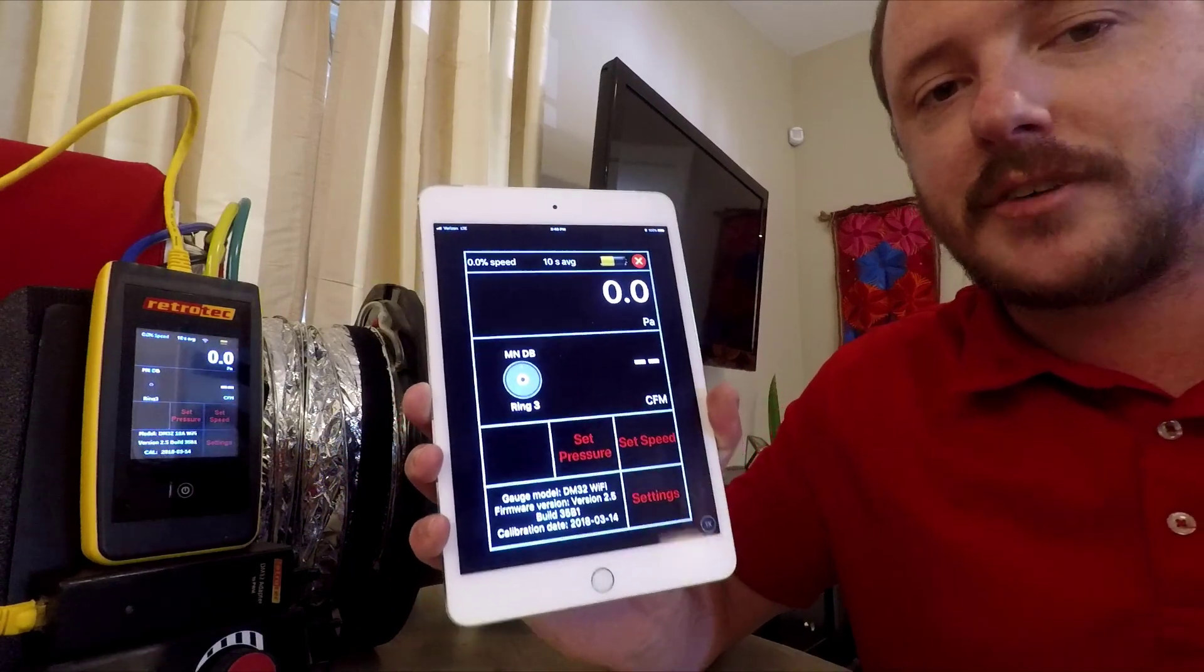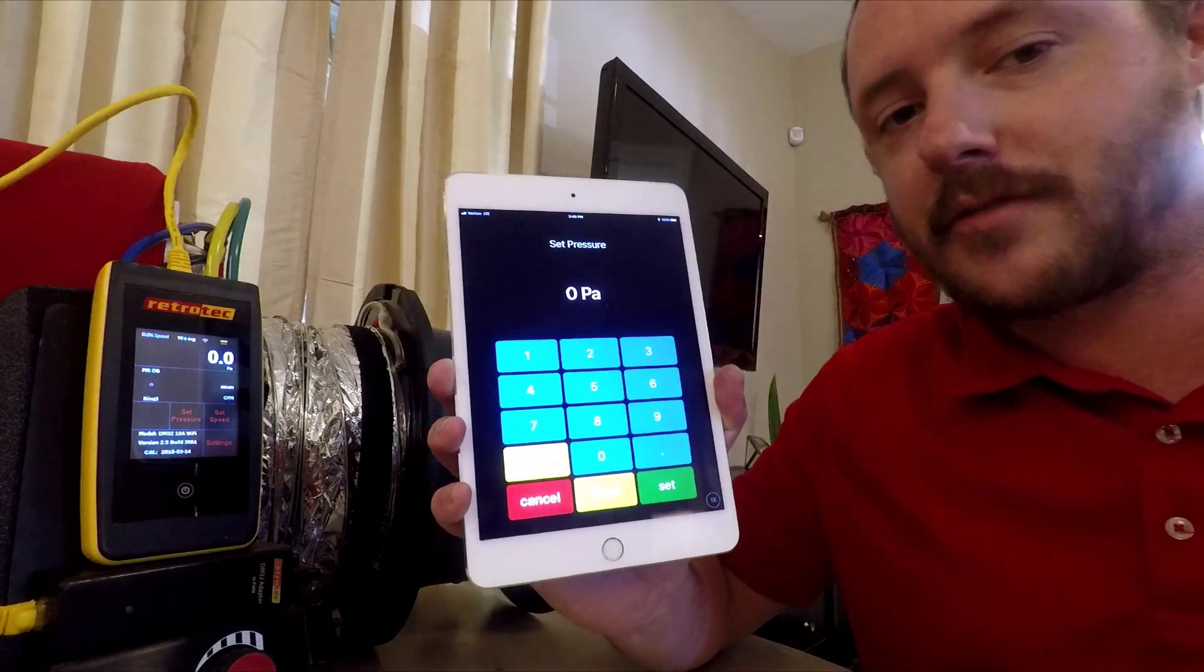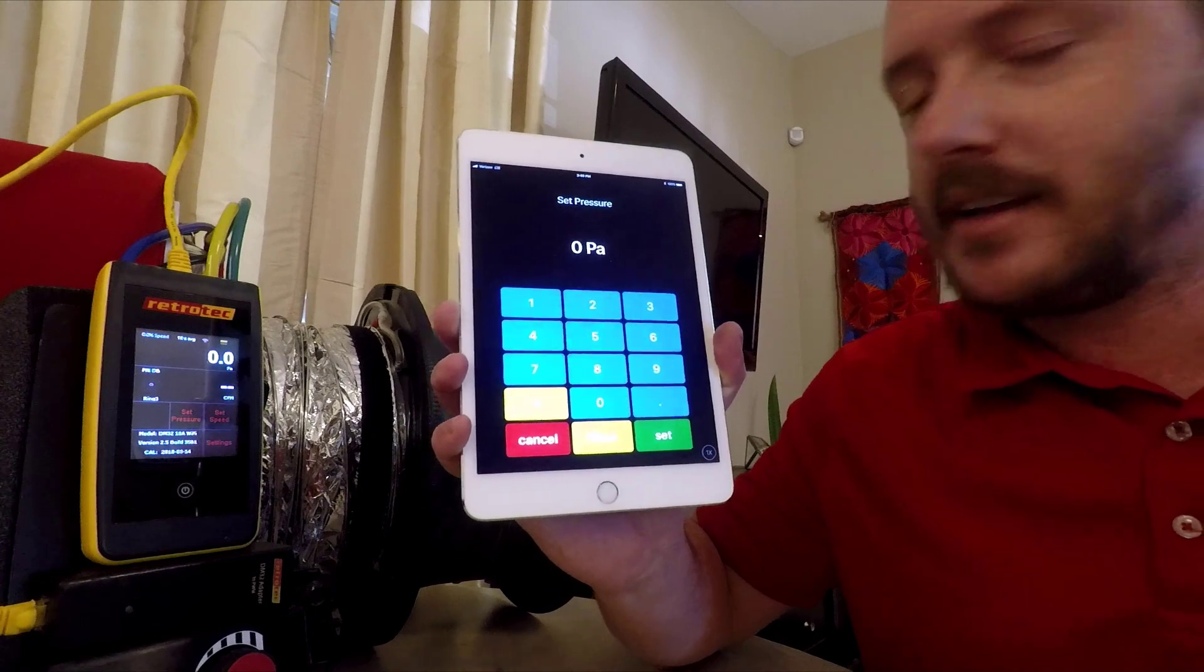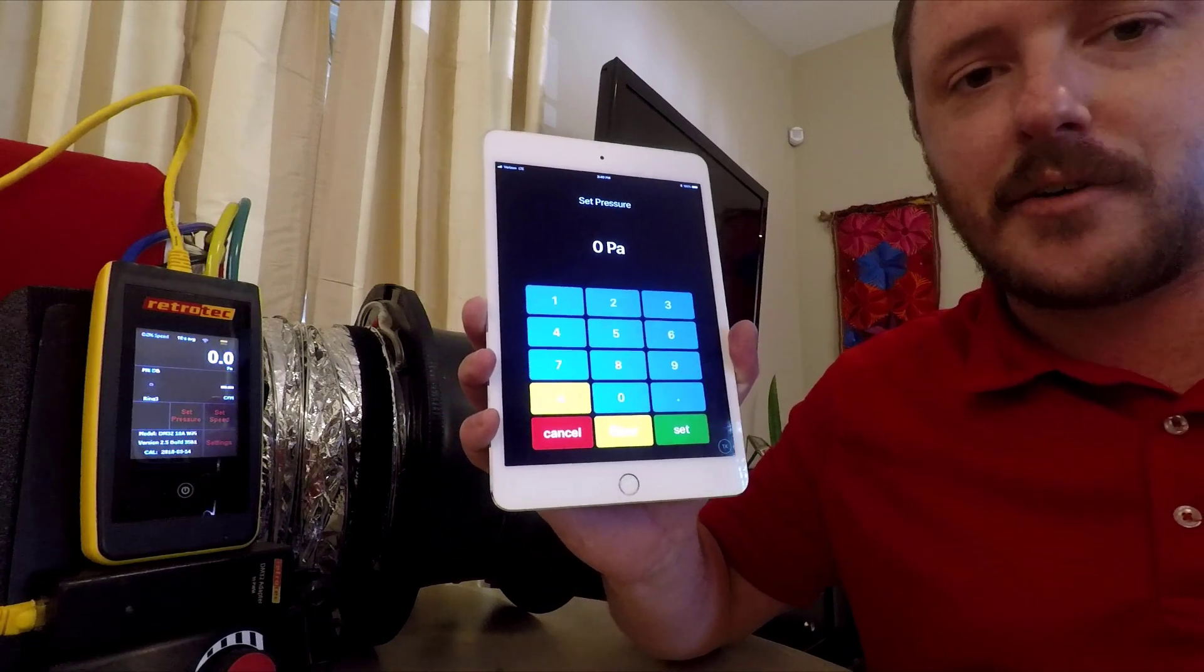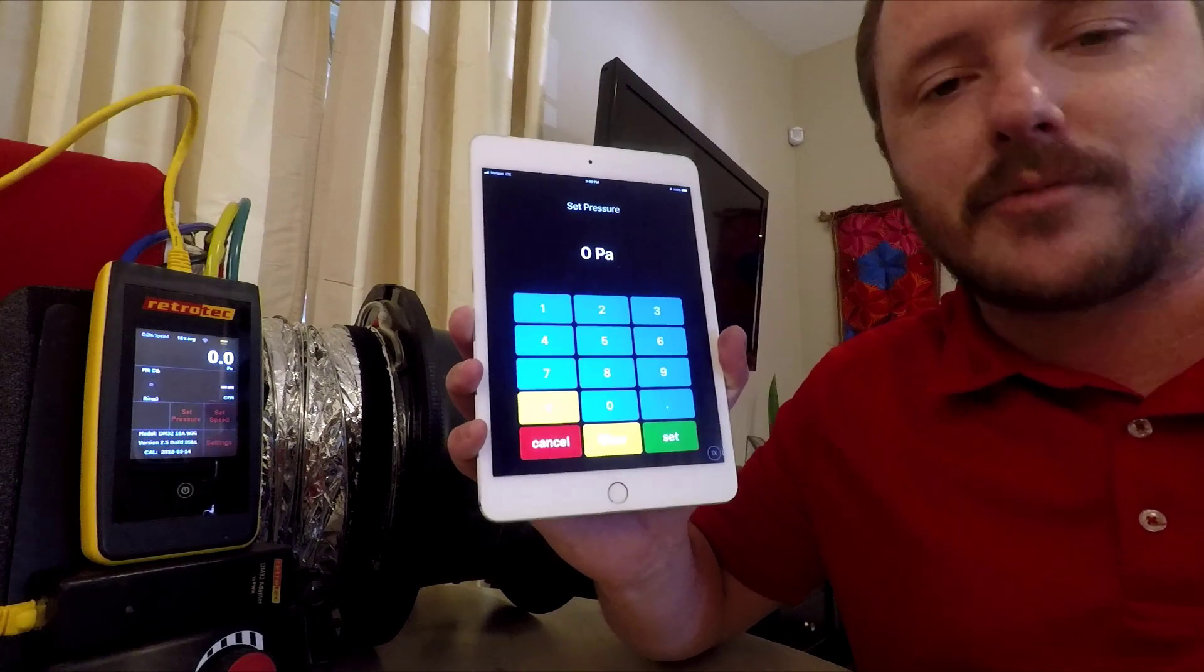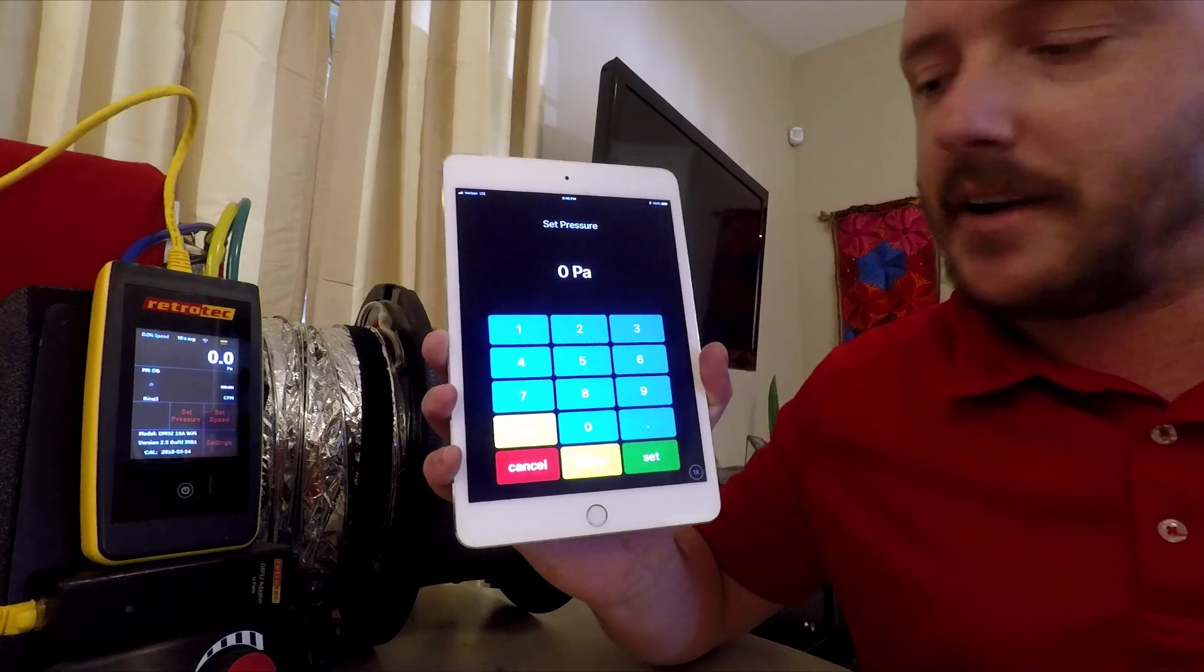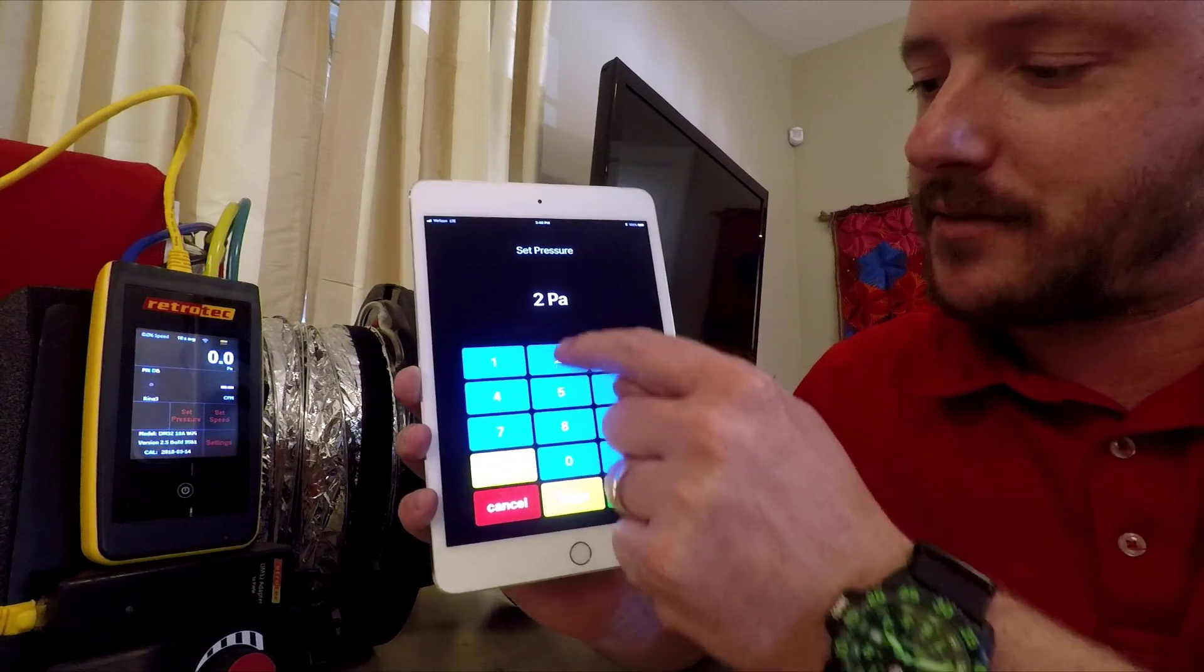And so to set your pressure, all you have to do is set pressure. Anytime you want to change a setting, whether it's fan speed or pressure, it always pulls up this keypad. That way you can customize your testing. So if you know on your DG 700, it has at 25 or at 50. On this gauge, you can do at whatever pressure you want. So we'll select 25 since we're doing a duct test.